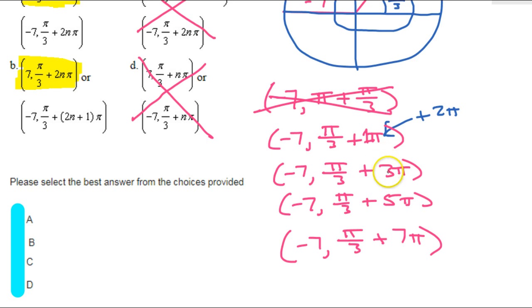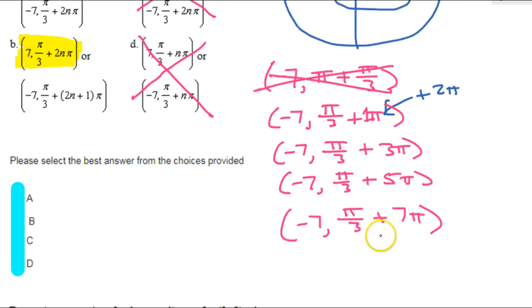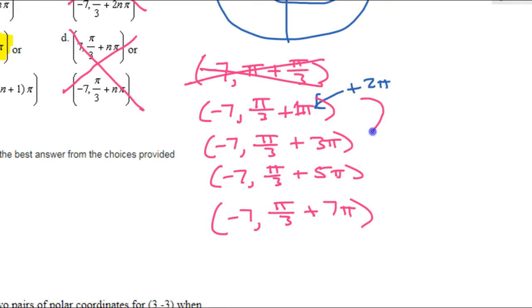So, what I have is 1, 3, 5, 7, etc. So, we're hitting all of the odd numbers. So, a good way to represent all of the odd numbers would be like this. So, I'll have my negative 7, and I'll have my pi over 3.